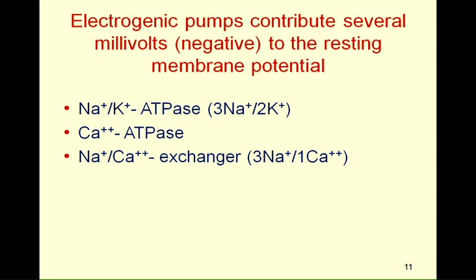These three transport systems can contribute to the membrane potential because they do not move equal numbers of positive and negative charges, generating a net current — they are said to be electrogenic. The sodium-potassium ATPase moves three sodium for every two potassium, so more positive charges leave than enter, making the membrane potential more negative. The calcium ATPase pump removes doubly charged calcium, creating a negative potential inside the cell. The sodium-calcium exchanger moves three sodium for every one calcium, producing a net excess of positive charges inside. Combined, these electrogenic pumps contribute several negative millivolts to the membrane potential.